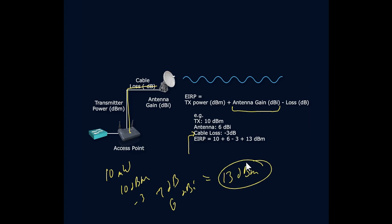That effective measurement, the injected power plus the antenna gain minus the cable loss that it took to get there is known as EIRP, the effective isotropic radiated power.